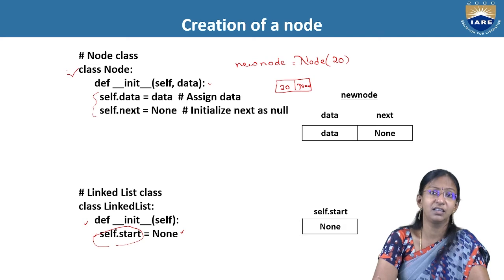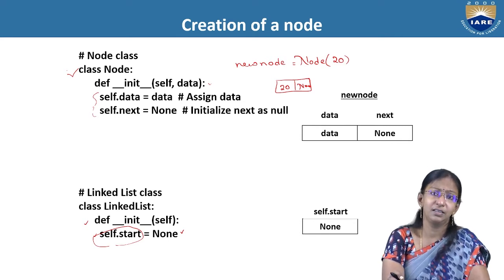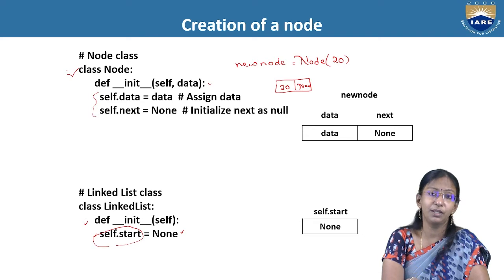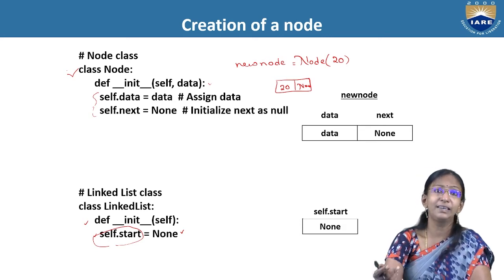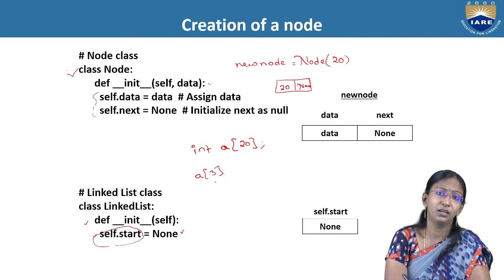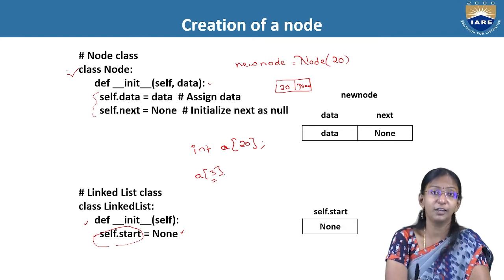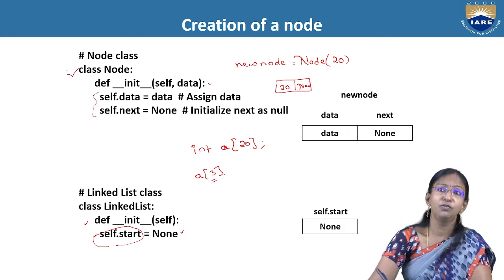Start is a pointer variable which holds only the address of the first node. Initially it is set to None, saying it doesn't hold any address. Once you start creating a linked list, we store the first node's address in start. While working with a single linked list, we have access to only the first node's address — that is one of the limitations of linked list compared to arrays. With arrays, if you specify the index value, you can retrieve any element directly. In linked list, we do not have index values.